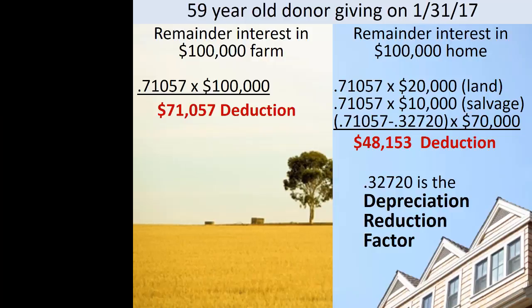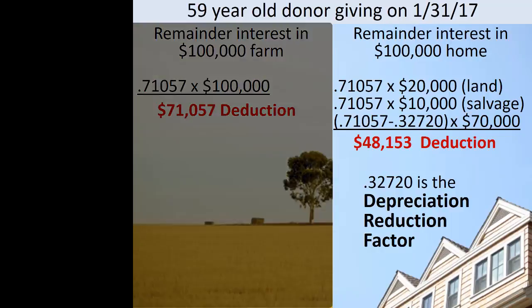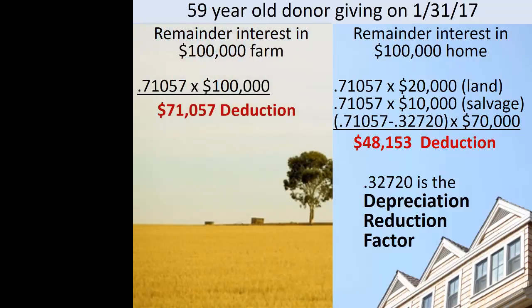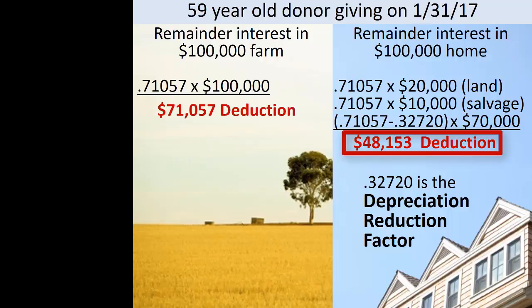Returning to our previous example, suppose that the 59-year-old donor gave a remainder interest in a $100,000 personal residence rather than a remainder interest in $100,000 of farmland. The deduction for the gift of the personal residence's remainder interest would be less than for the farmland remainder interest — that is, $71,057 for the farmland versus only $48,153 for the home.